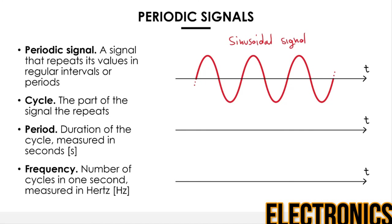Let's now talk about periodic signals. A periodic signal is a signal that repeats its values in regular intervals or periods. Looking at a sinusoidal signal as an example, the cycle is the part of the signal that keeps repeating itself. There are infinite choices you can make for the cycle — for instance, you could use this portion or that portion. A periodic signal is composed of the infinite repetition of the same cycle.